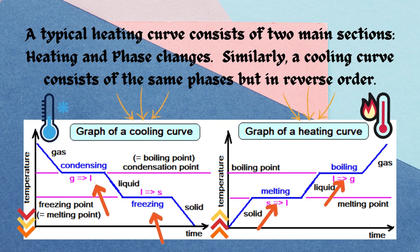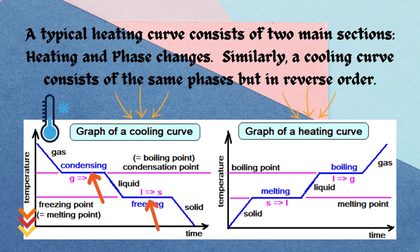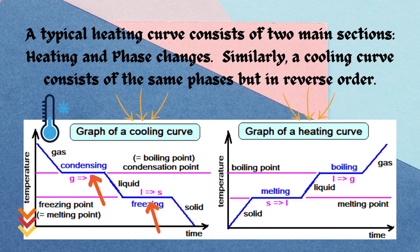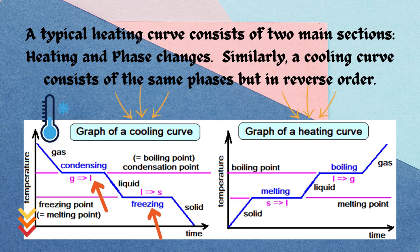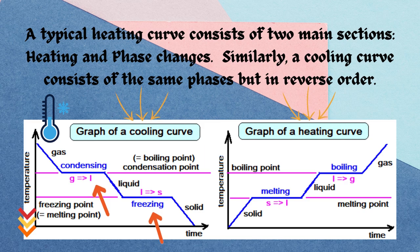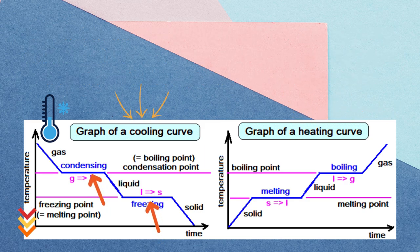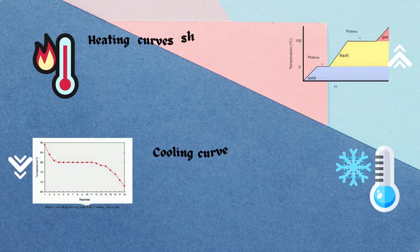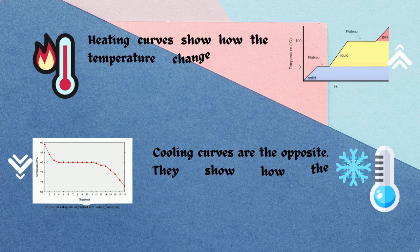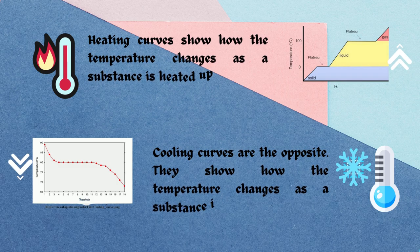The cooling curve graph shows a steady decrease in temperature as heat energy is removed from the substance, with temperature decreasing linearly with removed heat energy. The cooling curve is essentially the reverse of the heating curve — it begins with the cooling of the gas phase, then proceeds through condensation, cooling of the liquid, freezing, and cooling of the solid phase.